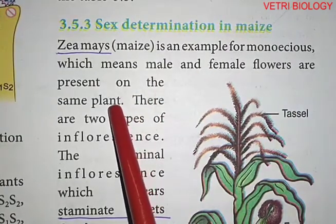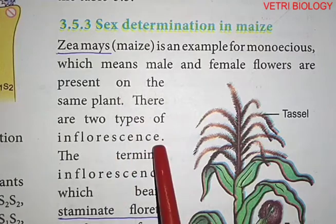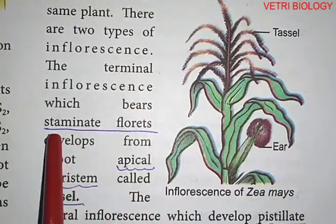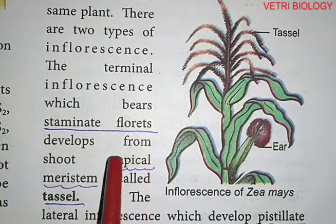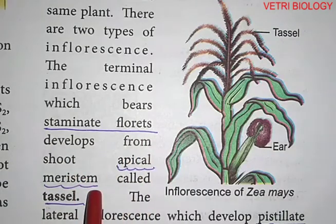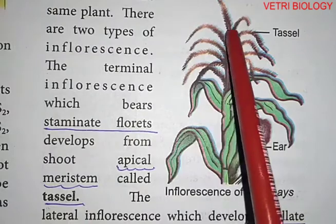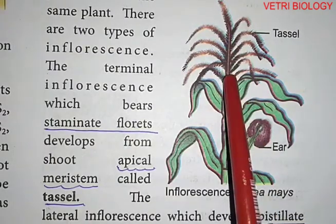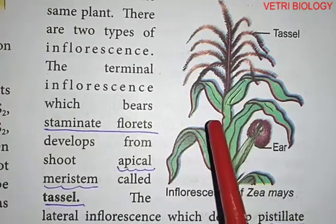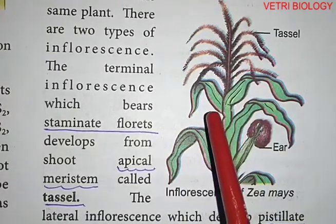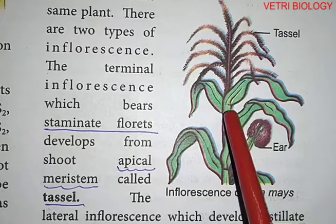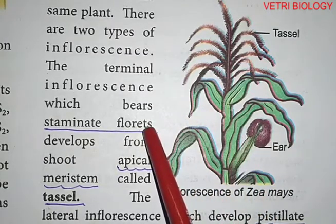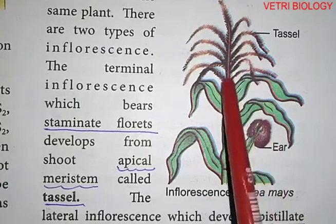In maize, two types of inflorescence are seen. The terminal inflorescence, which bears staminate florets, develops from the shoot apical meristem and is called the tassel. The terminal part bears staminate florets, which are small male flowers. In maize, this is called the tassel.